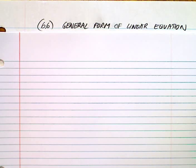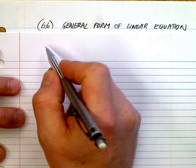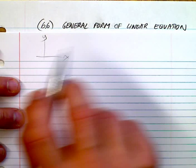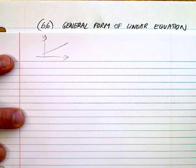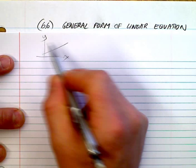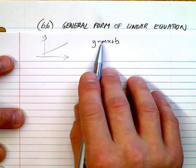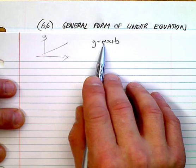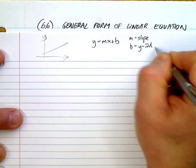Alright, here we go — lesson 6.6, the last section in this chapter. It deals with the final form of what we call a linear equation. Hopefully you're comfortable with what we call a relation — how two numbers are related, usually plotted on an x and y axis. When points line up in a line, we call that a linear function. One form of the linear equation is y equals mx plus b — the slope-intercept form — where m is the slope and b is the y-intercept.